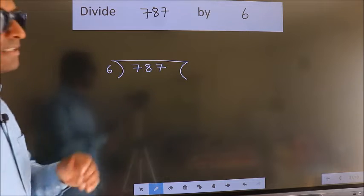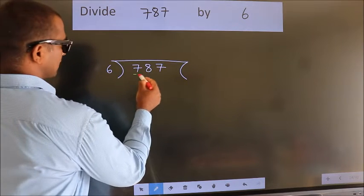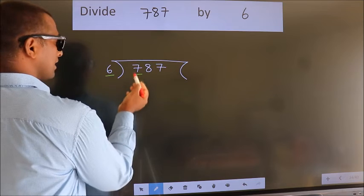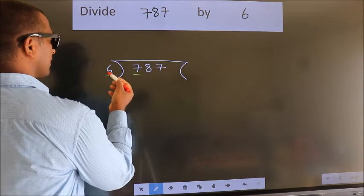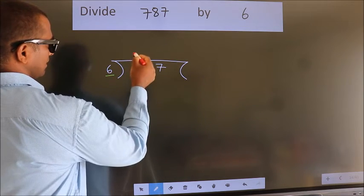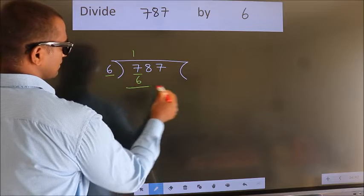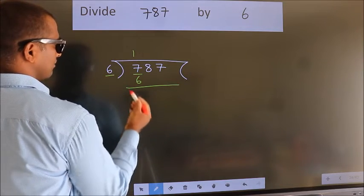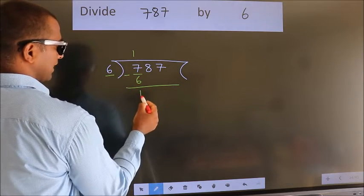Next. Here we have 7, here 6. A number close to 7 in 6 table is 6 once 6. Now, we should subtract. We get 1.